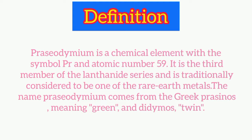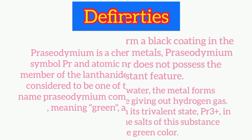Praseodymium is a chemical element with the symbol Pr and atomic number 59. It is the third member of the lanthanide series and is traditionally considered to be one of the rare earth metals. The name Praseodymium comes from the Greek prasinos meaning green and didymos meaning twin.